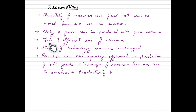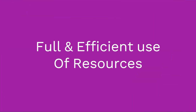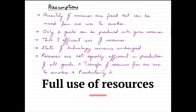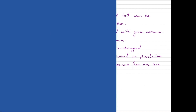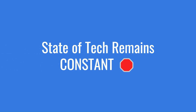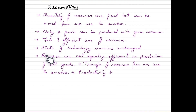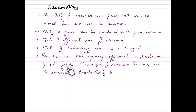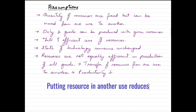In reality we can make multiple goods, but we stick to two for simplicity. We also assume full and efficient use of resources — full employment — meaning every resource the economy has is being fully and efficiently utilized. We assume the state of technology is constant, with no change in technological development, since that would affect the productive capacity of the economy. Finally, resources are not equally efficient in the production of all goods, so when resources are transferred from one use to another, productivity of that commodity may fall.